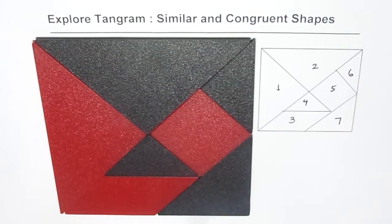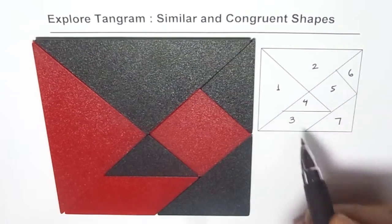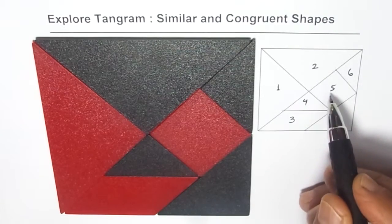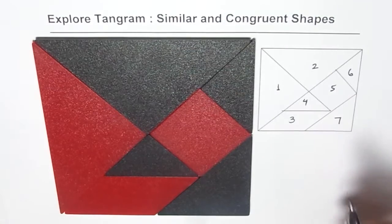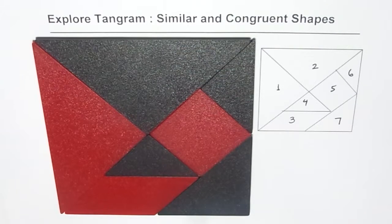Now here we have different shapes: triangle, triangle, parallelogram, triangle, square, triangle and another triangle. Now let us understand which shapes are similar.